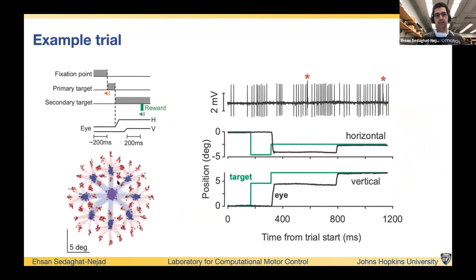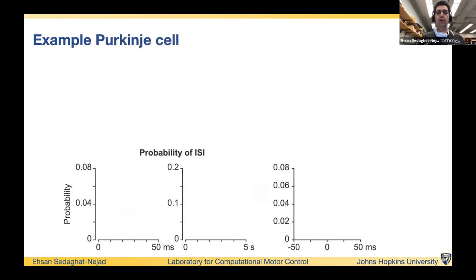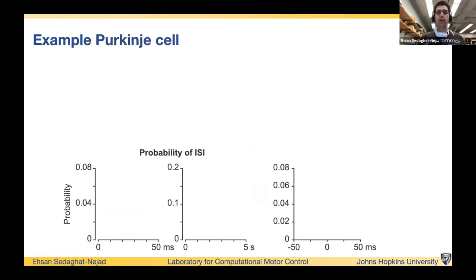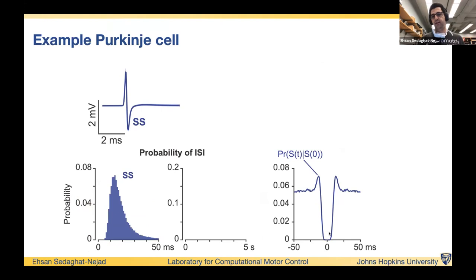While the monkey is performing these saccadic eye movement tasks, we are recording from the cerebellum — specifically from Purkinje cells. We identify Purkinje cells by detecting complex spikes, which are the unique signature of these cells. Simple spikes are the usual spikes other cells also have, firing at around 50–60 Hz, and one signature of Purkinje cell simple spikes is an extra bump after the refractory period.